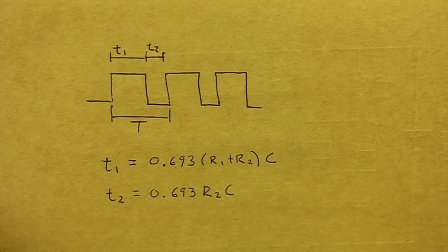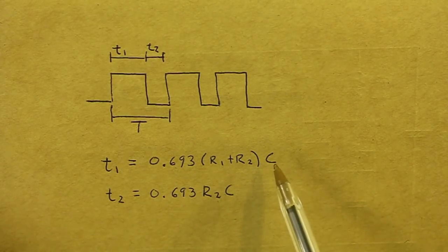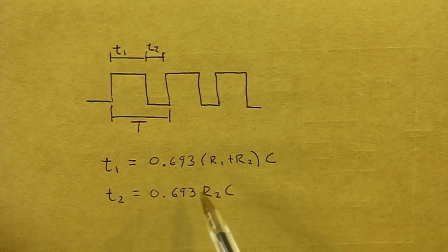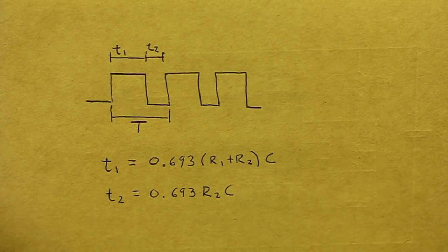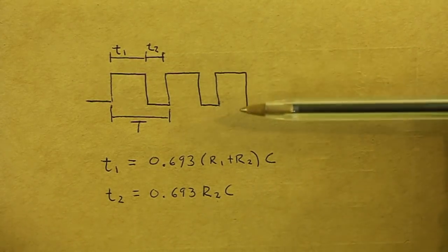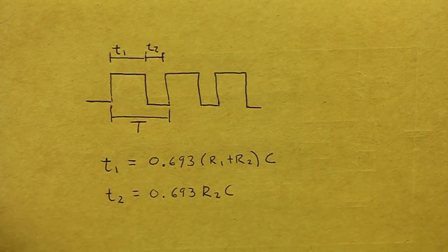As you can see, T1 depends on both resistors and the capacitance, and T2 only depends on a single resistance and the capacitance. Of course, the height of the pulse is controlled by the applied voltage.